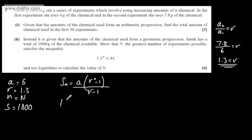So, what we can say then is that 1,800 must be equal to or greater than A, which is going to be the first term. Then, I'm going to have the ratio, which will be 1.3 to the power of N minus 1 over, now, 1.3 minus 1.